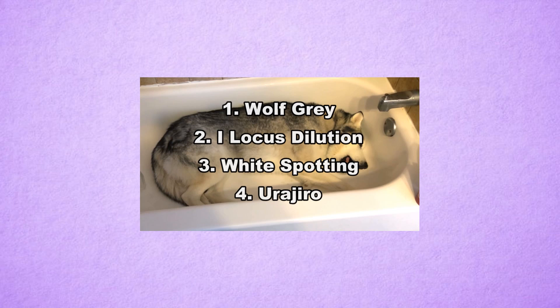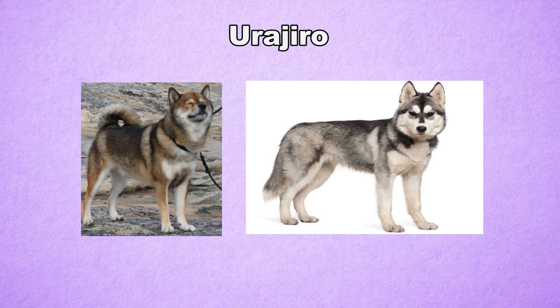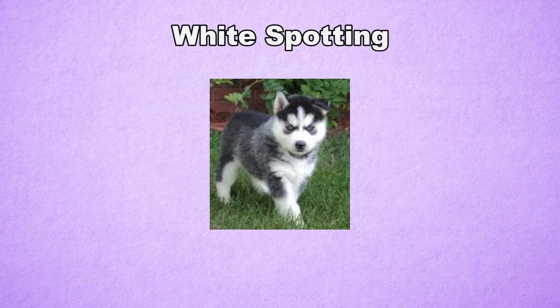The writer of this website thinks that the husky pattern is a result of the interaction of four alleles: wolf gray, I locus dilution, white spotting, and some form of Urajiro. Firstly, most Huskies are agouti. Secondly, considering the effect of Urajiro on agouti as the Shiba Inu is either sable or agouti. Thirdly, the red on the husky's coat would be diluted to an off-white cream by the I locus. Fourthly, white spotting is added resulting in blazes and chest patches.